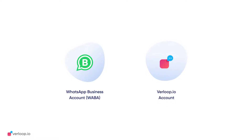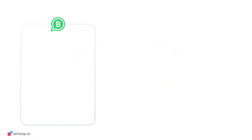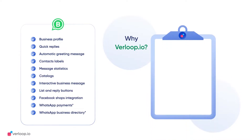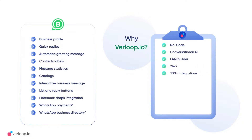In addition to the features you get with the WhatsApp Business API, a WhatsApp chatbot with Verloop.io has some added advantages. Verloop.io allows you to provide delightful customer conversations on WhatsApp with a no-code conversational AI platform that lets you integrate an intelligent FAQ builder, automate responses to customer queries 24/7, understand customer intent in multiple languages, and build customized conversation flows for each use case.